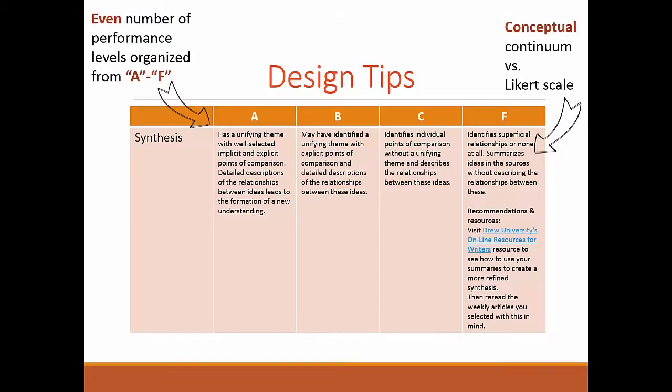Once you have your A and F products defined, you can begin describing what average performance would look like. Here are a few design tips that may help. We want to avoid central tendency by planning for an even number of performance levels. We also want to organize these so that the most proficient level is closest to the criteria.